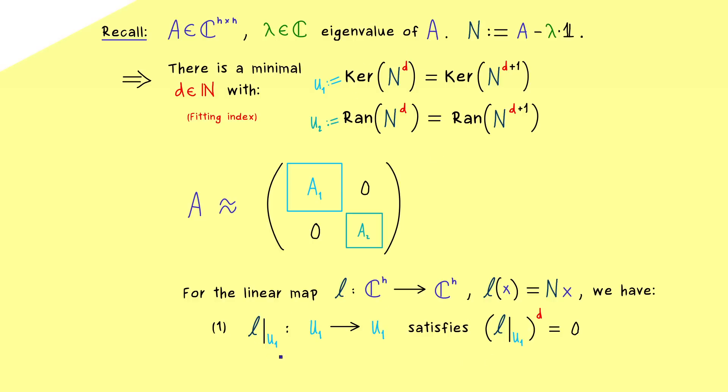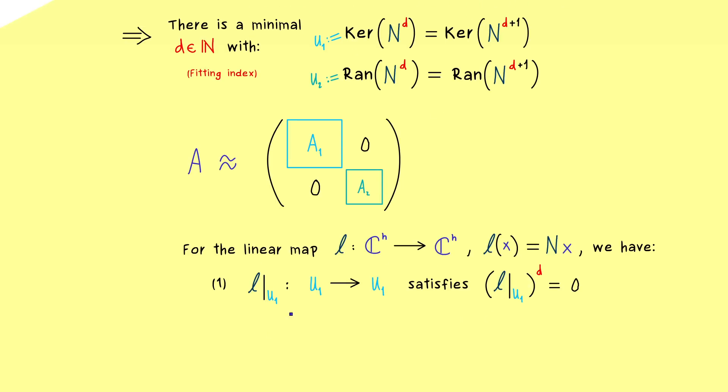So you see, the result is that this restriction here is a nilpotent map. So we can find a power such that we can bring the map to the zero map. And we also know this is the minimal power we can choose with that property.